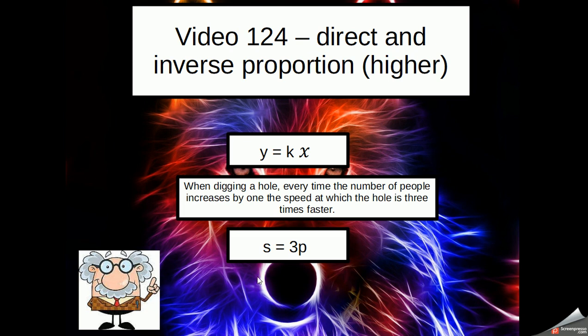If there were two people, the speed would be 6, and so on. So the speed is increasing in proportion to the number of people.